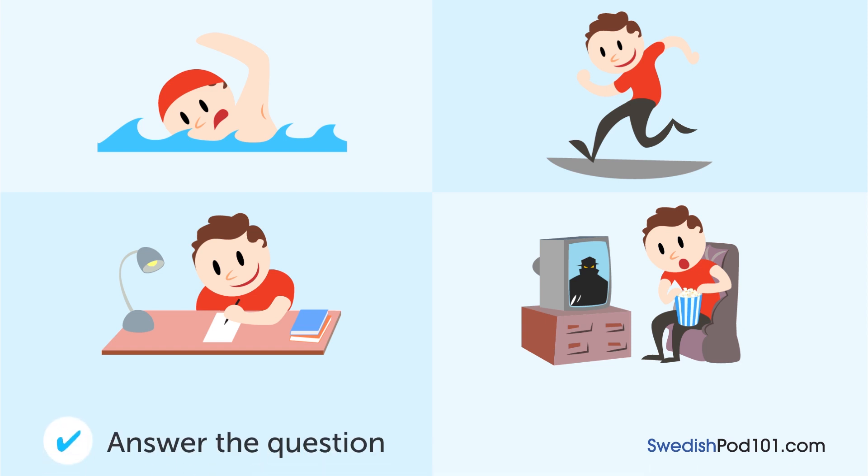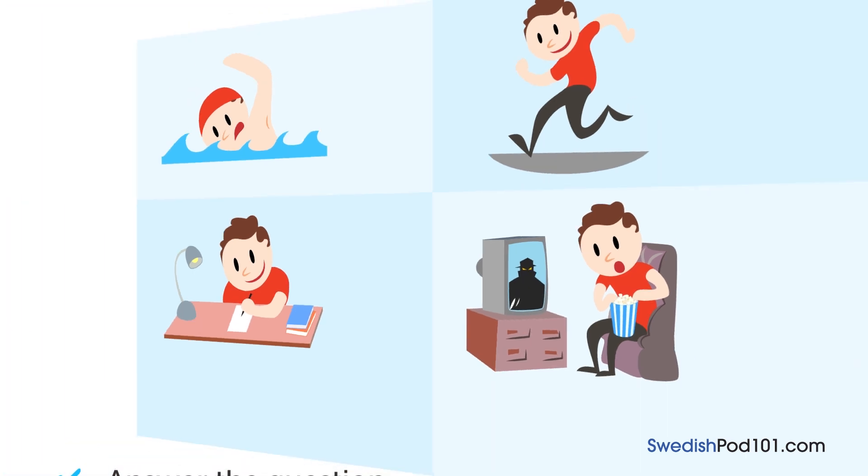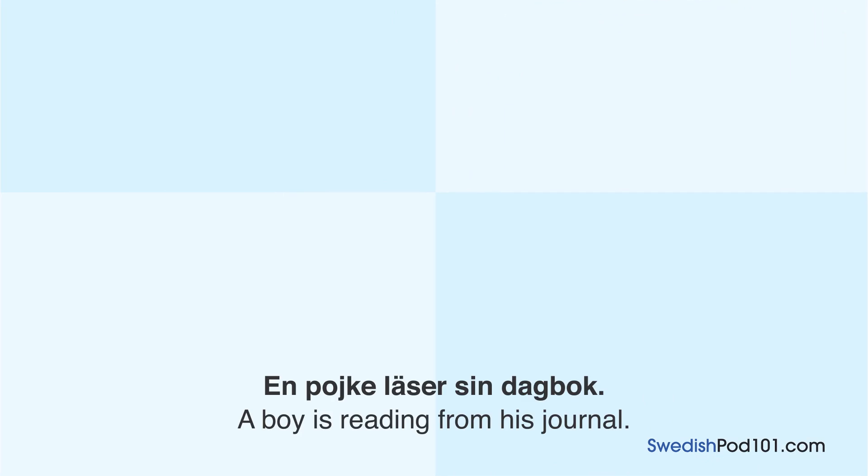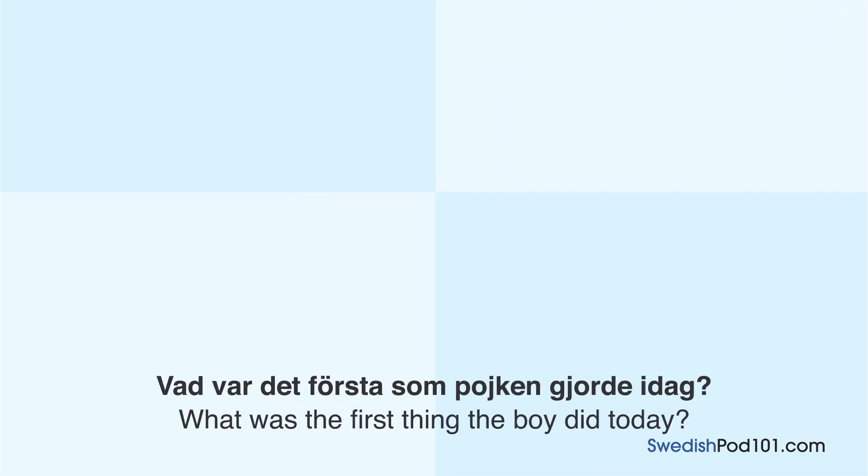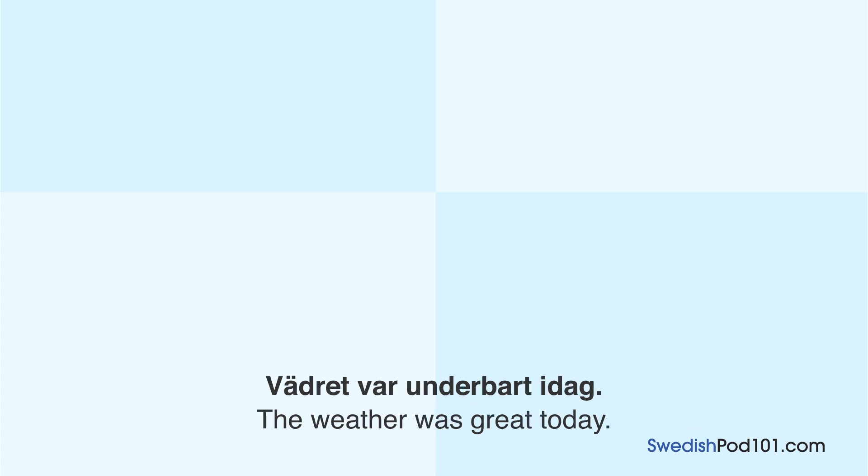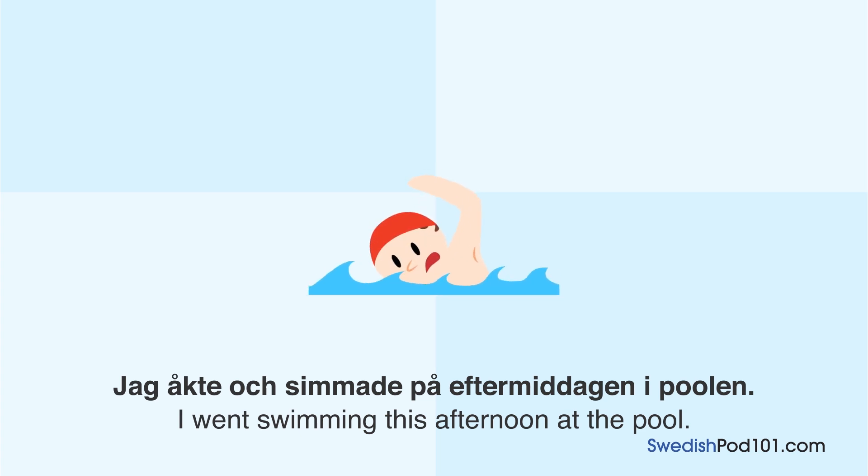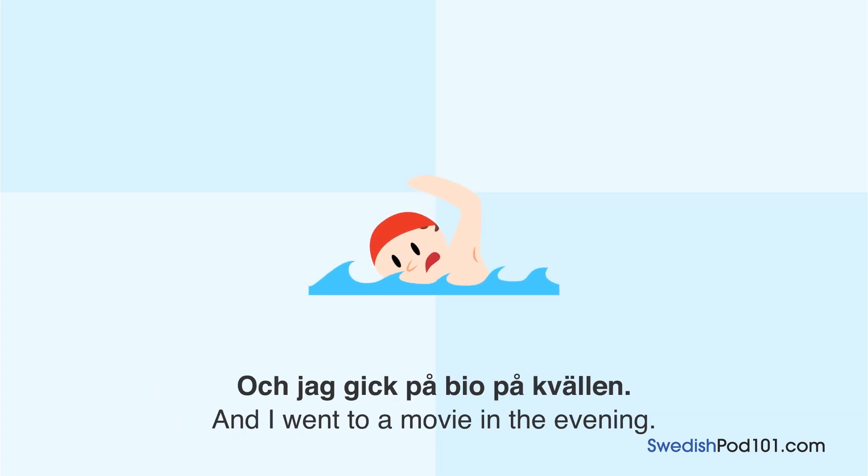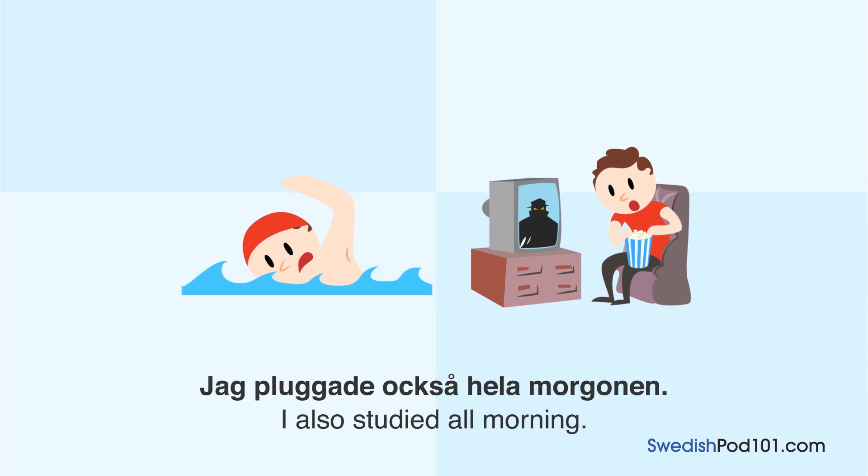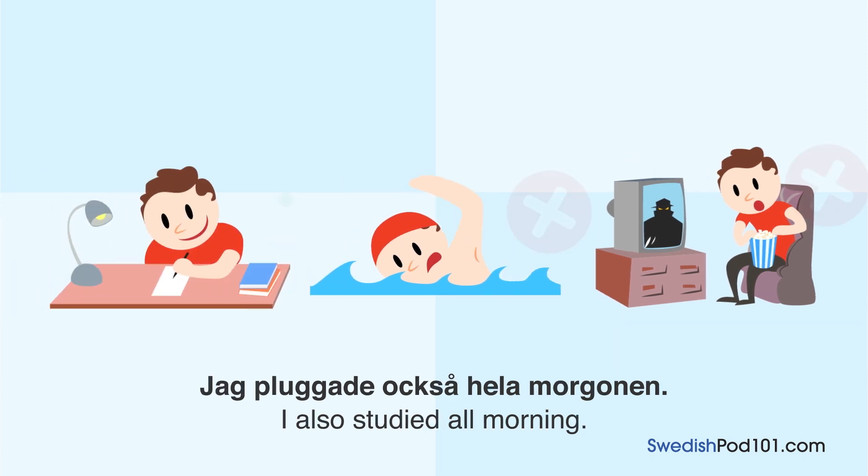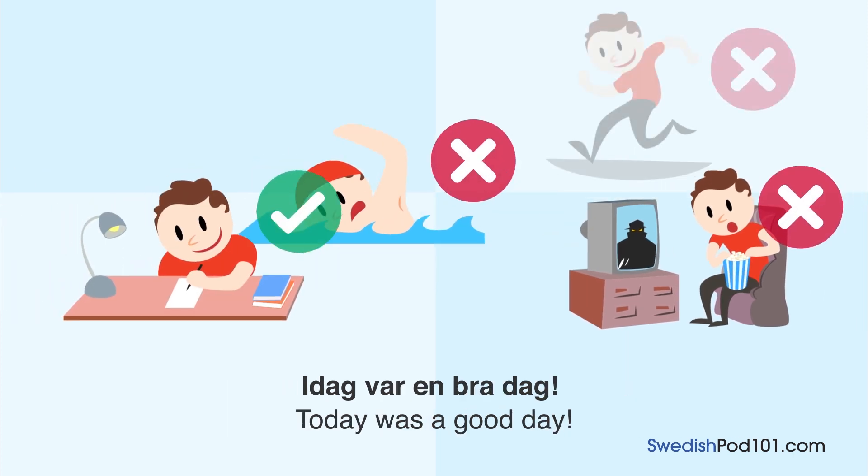Vad var det första som pojken gjorde idag? En pojke läser sin dagbok. Vad var det första som pojken gjorde idag? Vädret var underbart idag. Jag åkte och simmade på eftermiddagen i poolen. Och jag gick på bio på kvällen. Jag pluggade också hela morgonen. Idag var en bra dag.